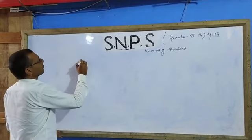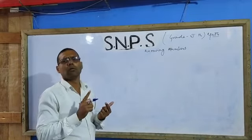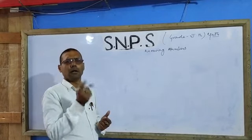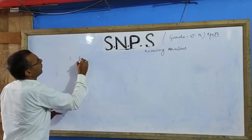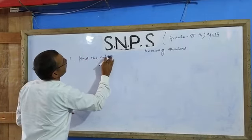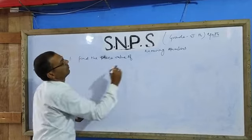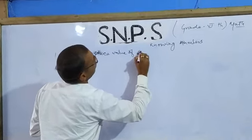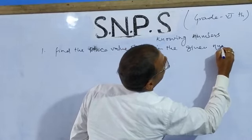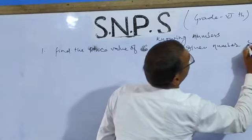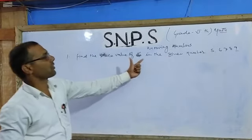Dear students, today I will ask you from the blackboard some questions which I left before. First point is: find the place value of 6 in the given number. The number is 5, 6, 7, 8, 9. Find the place value of 6 in the given number.